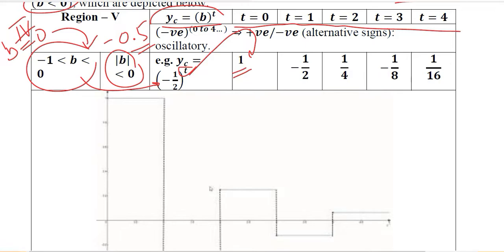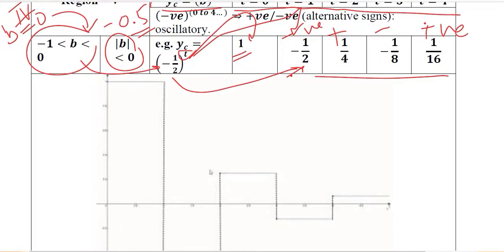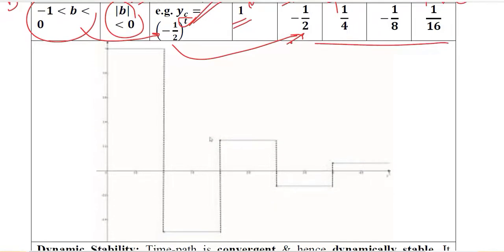If the power is 1, the answer will be −1/2. You can solve the remaining values by pausing the video. You will see that the results appear with alternating signs, which is a salient feature of the osculatory complementary function and hence the time path.